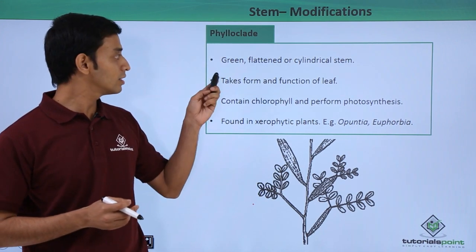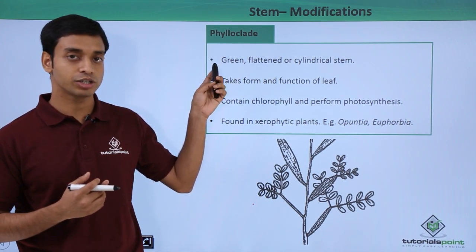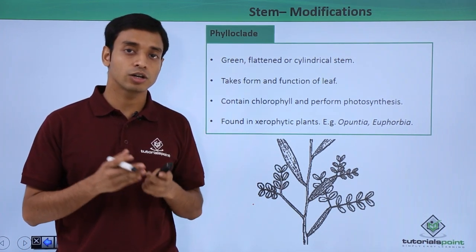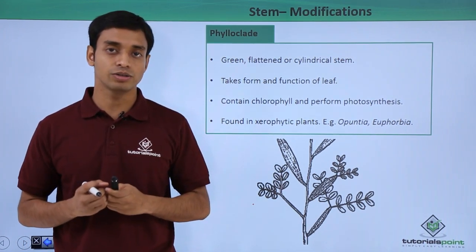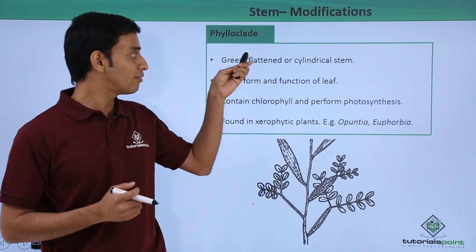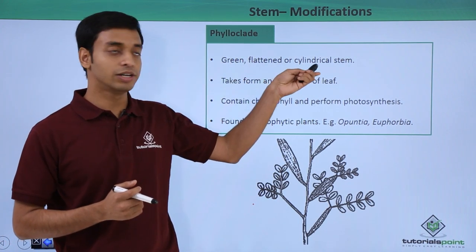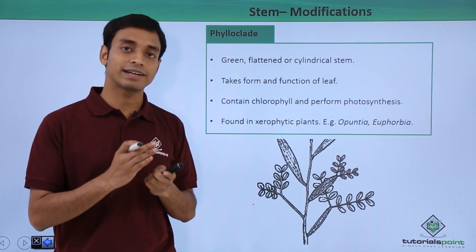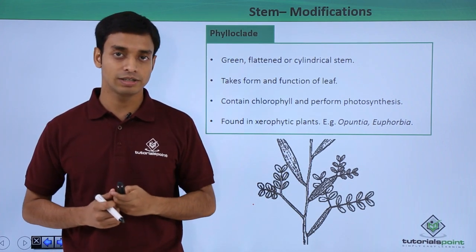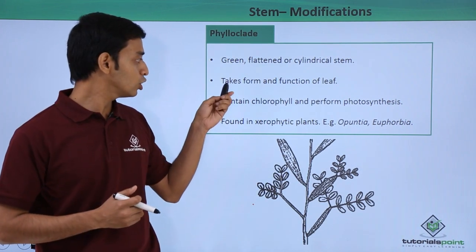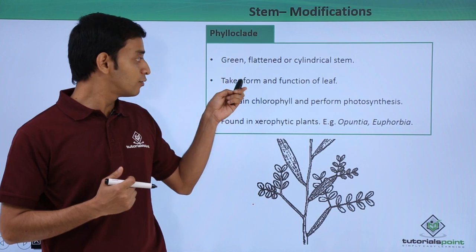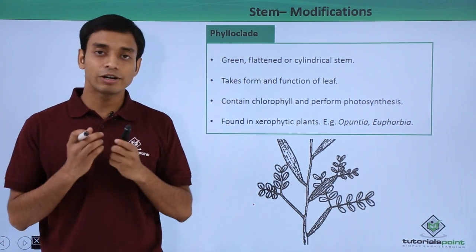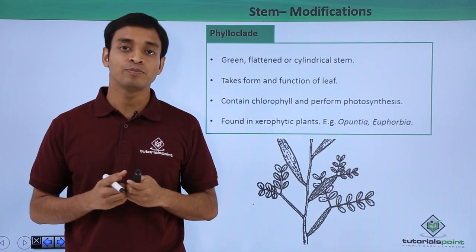The next modification is known as phyloclade. These are interesting modifications mostly found in xerophytes, or plants growing in very dry regions. These are green, flattened, or cylindrical stems that take the form and function of a leaf.